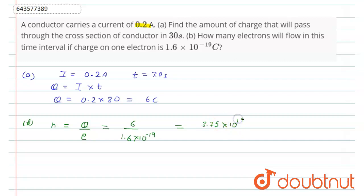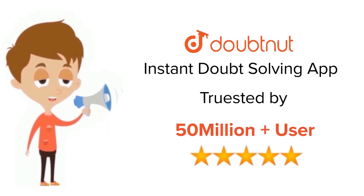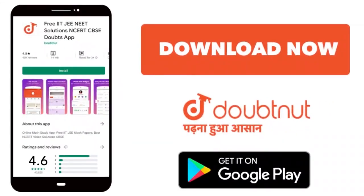That means total number of electrons are 3.75 × 10^19. Get it friend? So this is the answer. Thank you for watching. For class 6 to 12, IIT-JEE and NEET level, trusted by more than 5 crore students. Download Doubtnet app and we'll see you next time.